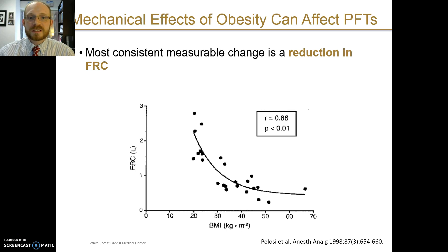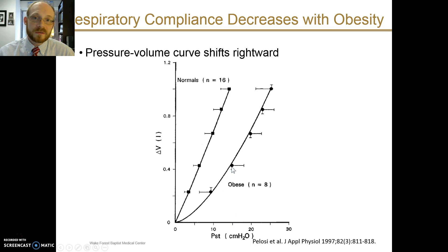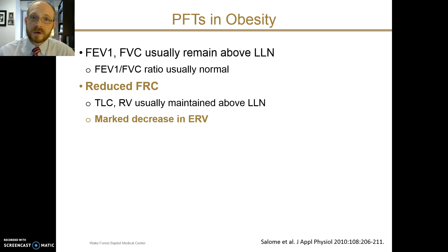The most consistent measurable change for patients that are obese is a reduction in the functional residual capacity. This graph shows the decrease in functional residual capacity with an increasing BMI. Another way to conceptualize this is that the respiratory compliance has been decreased. There's a shift of the pressure-volume curve towards the right in the obese individual — it takes more pressure to generate the same change in volume. When pulmonary function tests are measured in obese patients, you typically see normal FEV1 and FVC measures. Again, the hallmark reduction here is a reduction in functional residual capacity.